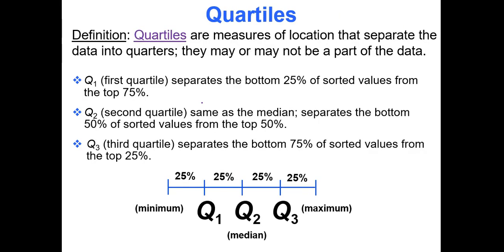Our first stop is quartiles — measures of location that separate the data into quarters. Believe it or not, quartiles split the data into quarters. They may or may not be a part of the data, so a quartile value may or may not be a data value in the data set itself.